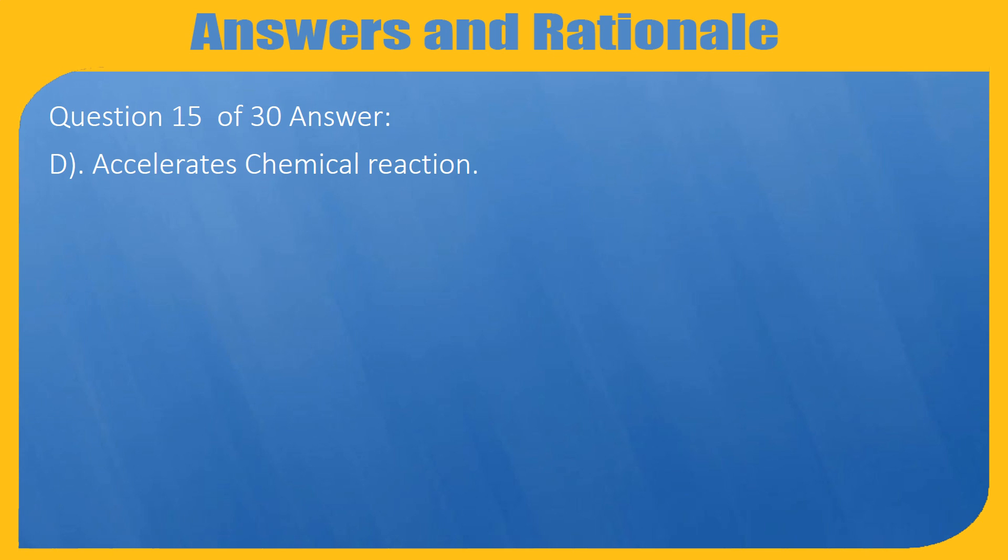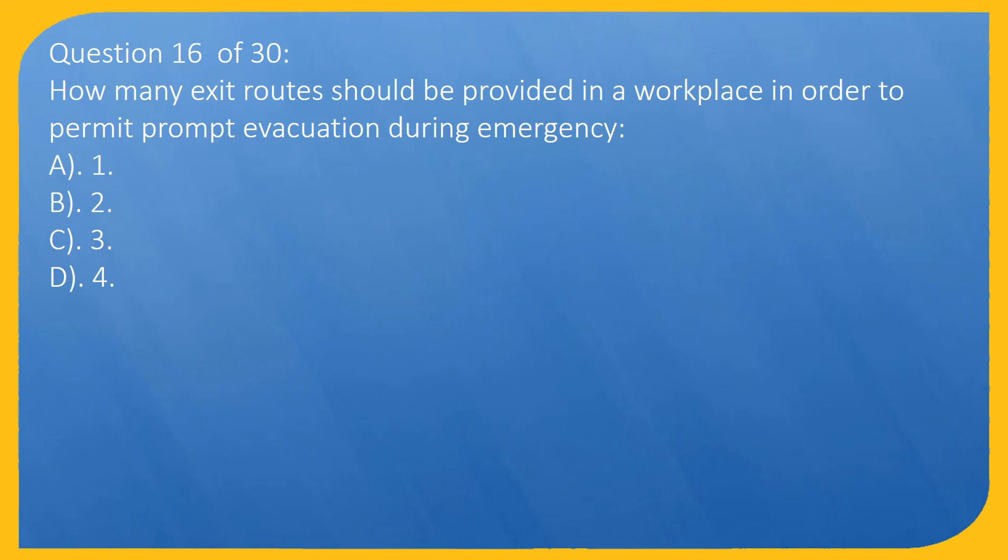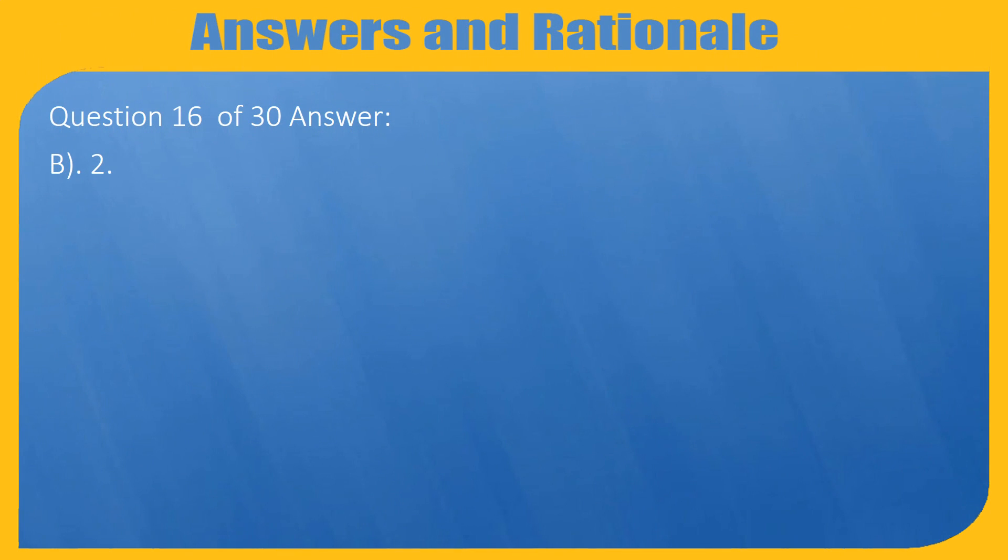Question 16 of 30: How many exit routes should be provided in a workplace in order to permit prompt evacuation during emergency? A. 1, B. 2, C. 3, D. 4. Answer: B. 2.